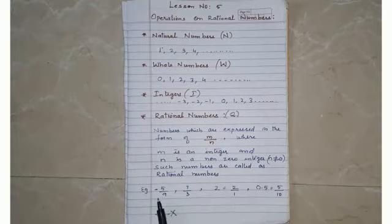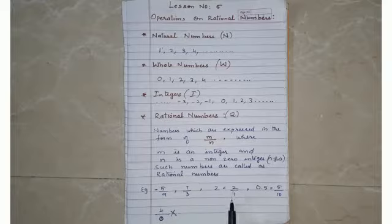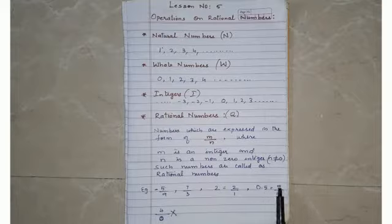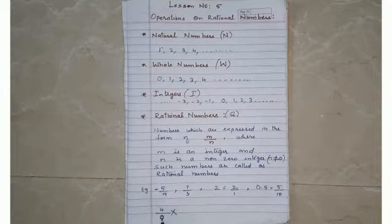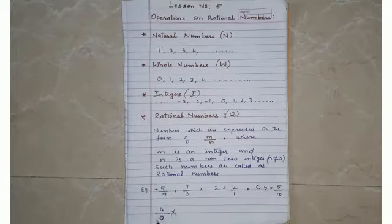Examples of rational numbers: −5/9 is a rational number; 7/3 is also a rational number; 2 can be expressed as 2/1; and 0.5 can be expressed as 5/10, so it is also a rational number. However, 4/0 is not a rational number because the denominator is zero, which violates the condition that the denominator should not equal zero.